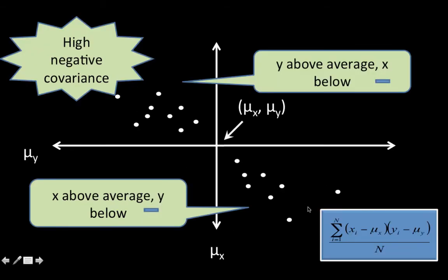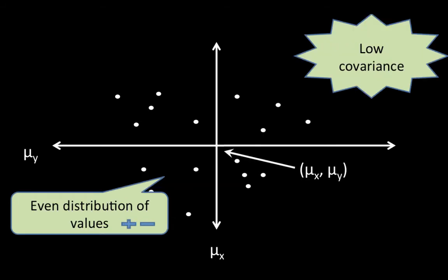Taking a different example: here, for these points, xi is greater than mu_x — the x component is bigger than the mean — but the y component is lower than the mean of y. Therefore one part is positive and the other is negative, so the overall contribution of each point to the covariance is negative. When you have something like this, you have a very high negative covariance, which indicates that when one is high, the other is low and vice versa. Whereas if the points are equally distributed in all four quadrants, the positive and negative values get offset, so the covariance is low.